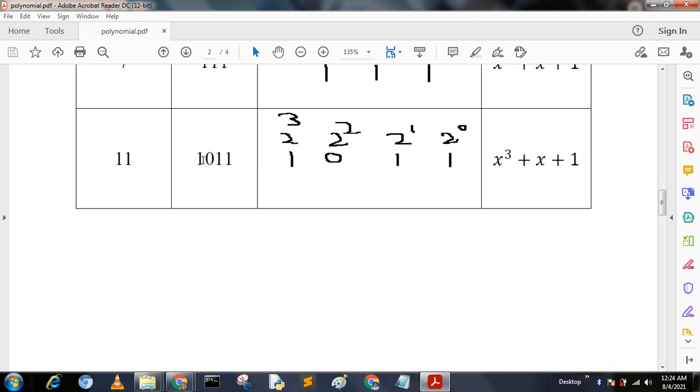11 with binary representation 1011. That is 2^0, 2^1, 2^3, which is 1, 0, 1, 1. We write it as a polynomial: x^3 + x^1 + 1. We omit the zero position, so x squared cannot be written here.